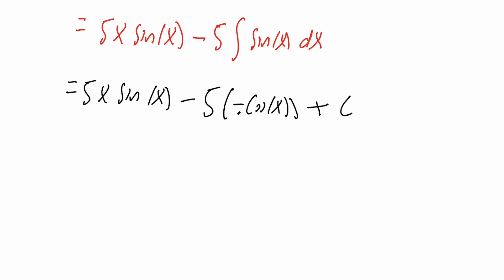Our last step: a negative times a negative is a positive. We finally get 5x sine x plus 5 cosine x plus c. This is our final answer, and that's all we need to do for this problem.